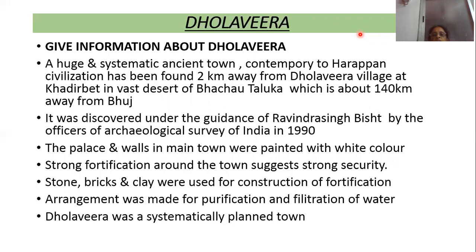Dolavira was discovered by officers of the Archaeological Survey of India under the guidance of Ravendra Singh Bisht in 1990. They found that the palace and the main town walls were painted with white color. A strong fortification around the town, constructed using stone, bricks, and clay, suggests strong security.